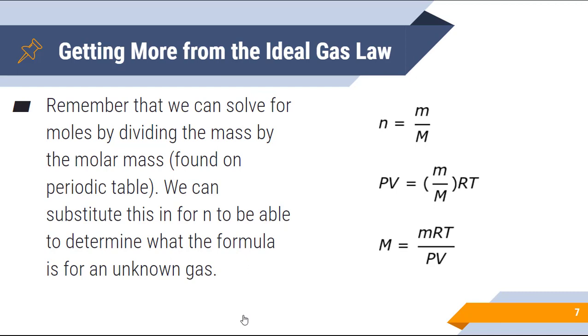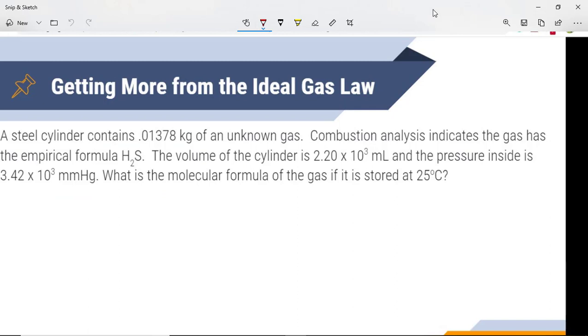Let's do some practice problems with that as well. A steel cylinder contains 0.1378 kilograms of an unknown gas. Combustion analysis indicates this gas has the empirical formula of H2S. And the volume of the cylinder is 2.20 times 10 to the third milliliters. And the pressure inside is 3.42 times 10 to the third millimeters of mercury. What is the molecular formula of the gas if it is stored at 25 degrees Celsius? So we're still doing a PV equals nRT type of problem.